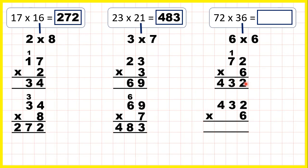So now we can take our answer and multiply it by the last number in our factor pair. 2 times 6 is 12. 3 times 6 is 18. Plus 1 is 19.